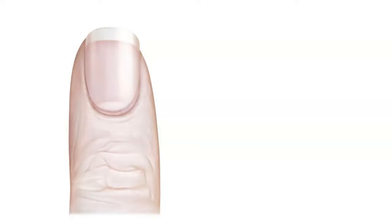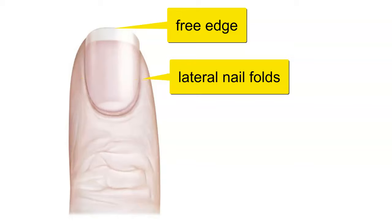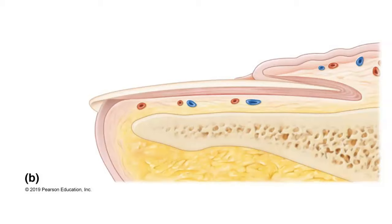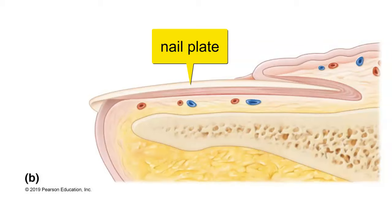Moving on to nails, which are also a derivative of the epidermis. Here we can see the free edge, the lateral nail folds — the epithelial tissue on the sides of the nail — and the epithelial tissue at the base of the nail, called the proximal nail fold. The little bit of epithelial tissue that grows onto the nail, what we would call the cuticle, is known as the eponychium. In this view, the part of the nail adhered to the finger is called the nail plate, and the part like the root of the nail that we can't see from the surface is known as the nail root.